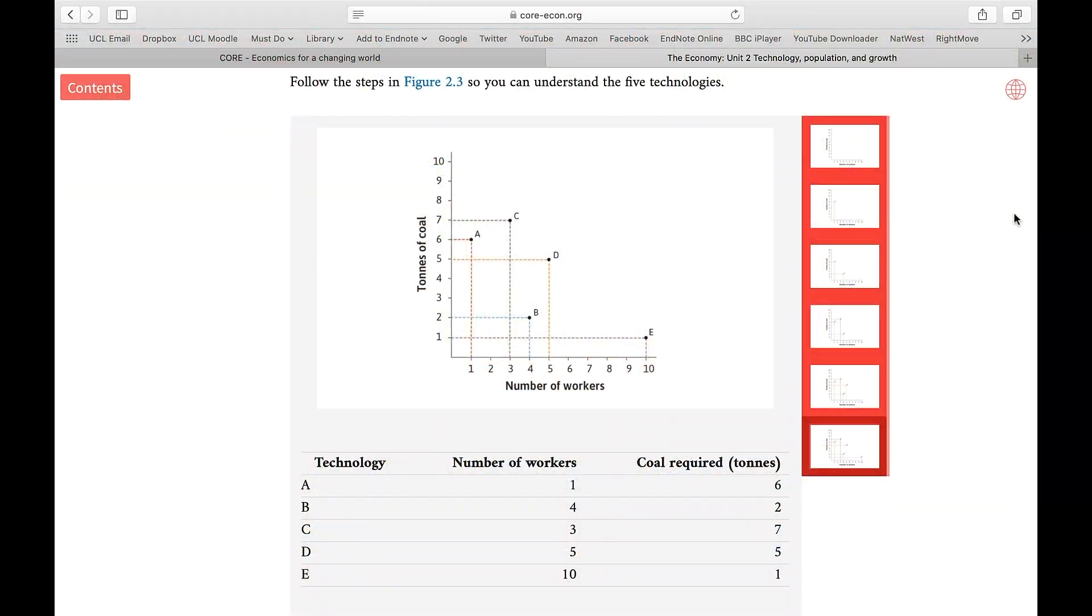If we go back to our graph, we should bear in mind that all these five technologies, A, B, C, D, E, produce the same amount of output. That is 100 meters of cloth.